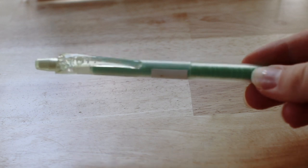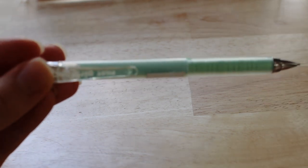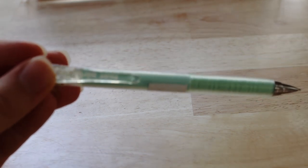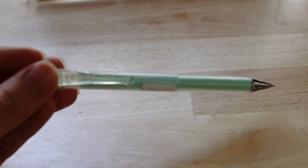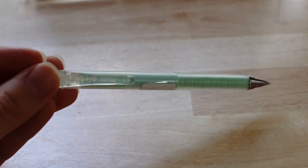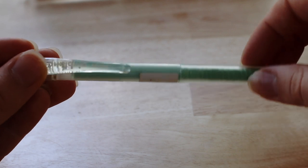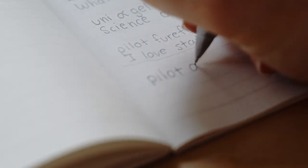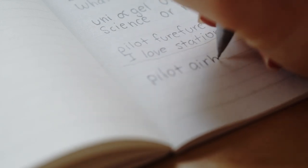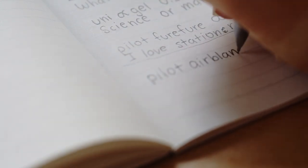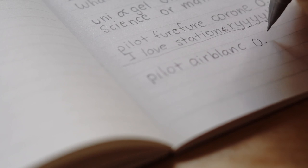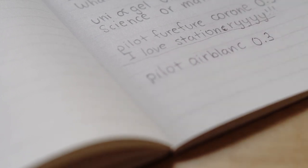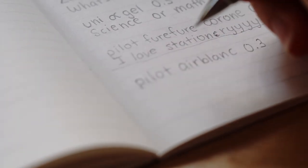The next mechanical pencil I got was the Pilot Air Blanc 0.3 pencil, and it cost only $3.95, so significantly cheaper than the previous ones that I showed, but it also has a grip, which I really like. It also has an eraser, which is very nice, and it's green. It's just a pretty much regular green mechanical pencil, and that's it.